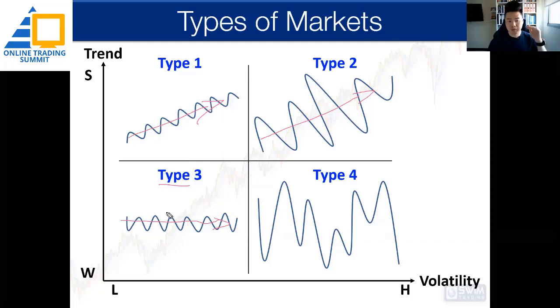Type three is the kind of weak trend with low volatility. That means it's tight range-bound and everything is stuck within a support zone and resistance zone. That's type three, which is not very common, but we tend to see it from time to time.